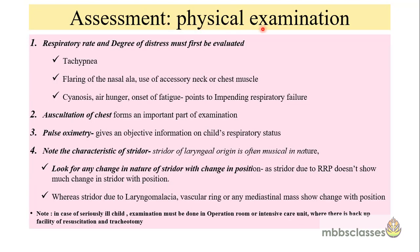After history taking comes physical examination. The respiratory rate and degree of distress must be evaluated. Look for tachypnea, flaring of the nasal ala, or use of accessory chest muscles indicating respiratory distress. Signs like cyanosis, air hunger, and onset of pitting point towards impending respiratory failure. Always auscultate the chest and perform pulse oximetry, which gives objective information on the child's respiratory status. Note the characteristics of the stridor as well.